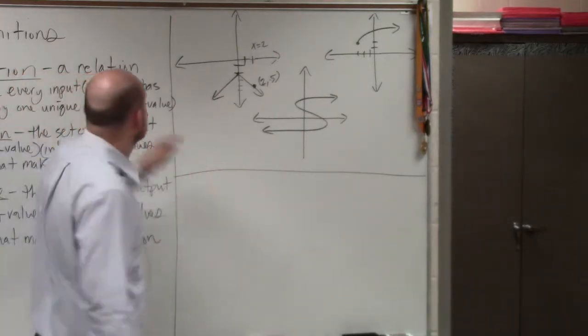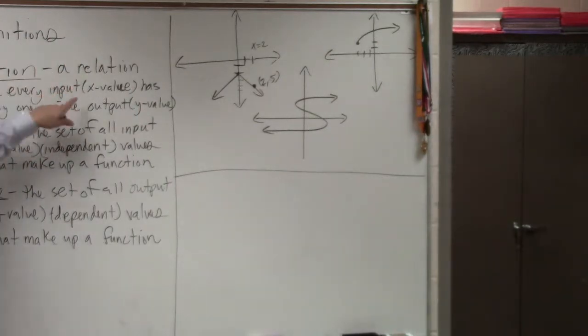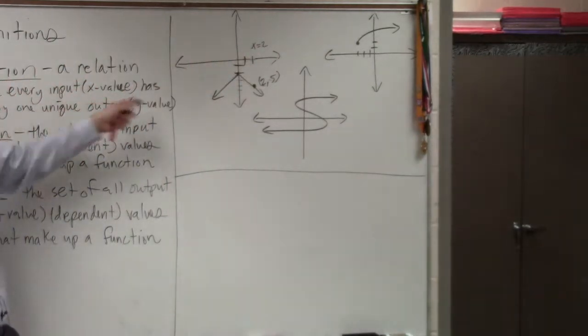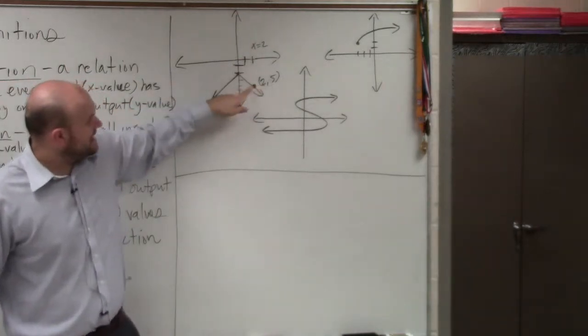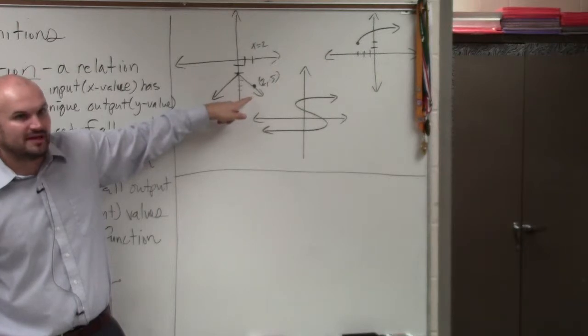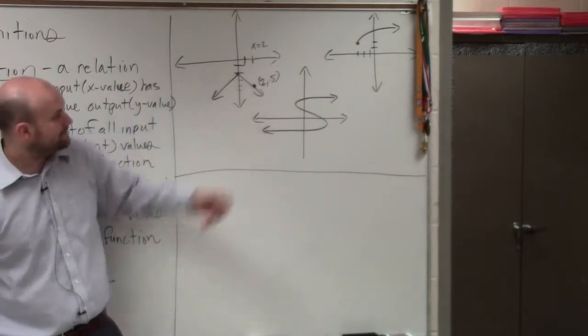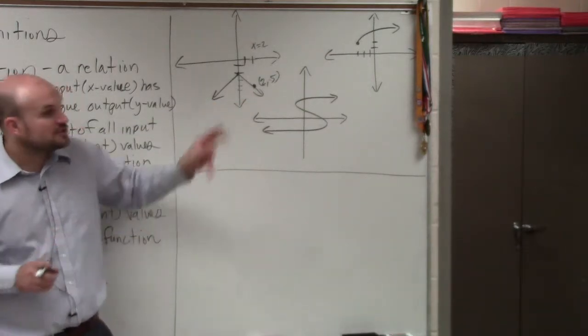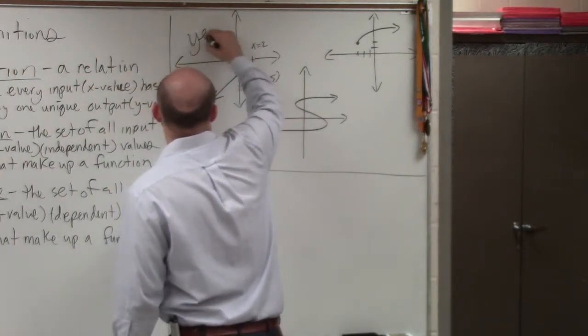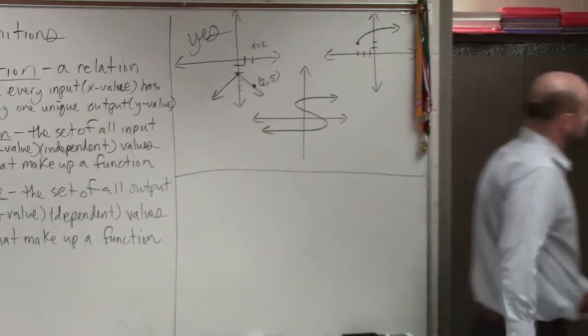So what the function says is a relation where every input, so every x value, so this x value has exactly one y value. Is negative 5 the only y value when x is equal to 2? Is there any other y values? No. So therefore, this is a function. So you could say, yes, this is a function, Mr. McLogan.